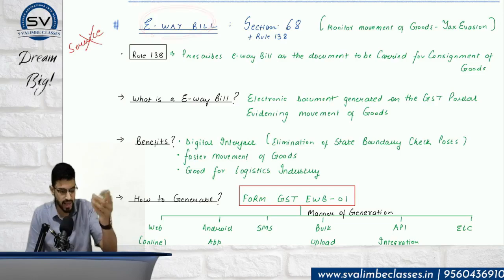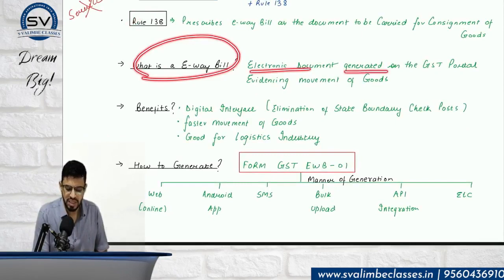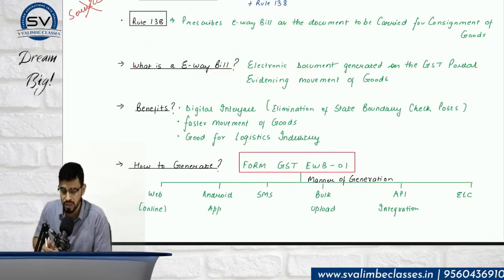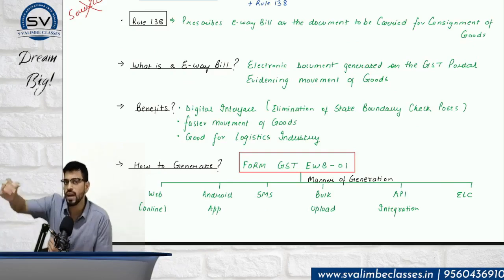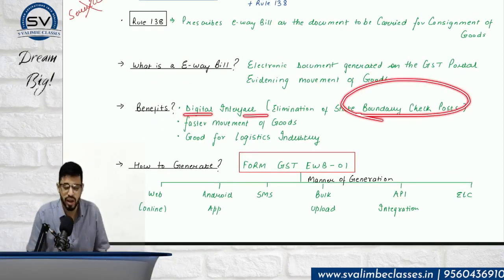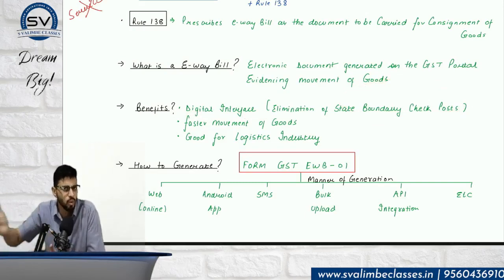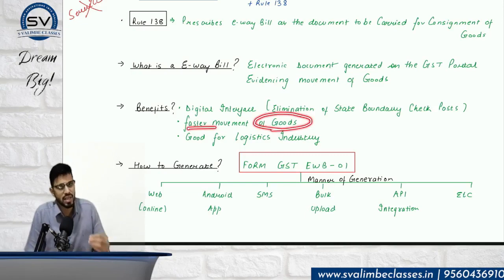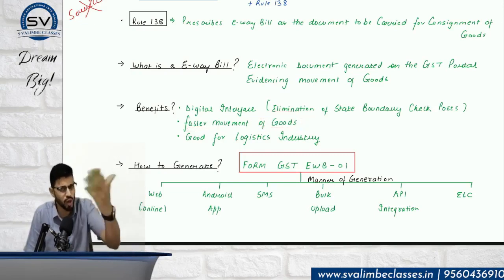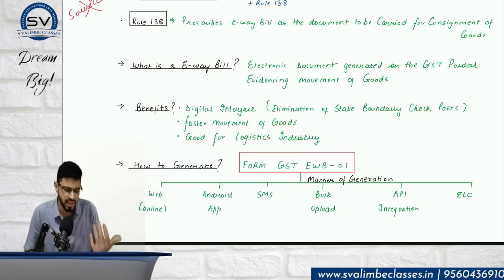So at the time of transit you need to generate an e-way bill — Rule 138 says the same. It is an electronic document generated on the GST portal which evidences movement of goods. When your e-way bill is generated, an intimation goes to the government that goods movement is about to happen. Benefits include a digital interface, no state boundary check posts, physical checking is very advantageous, faster movement of goods, and overall it is better for the logistics industry because convenience has come.